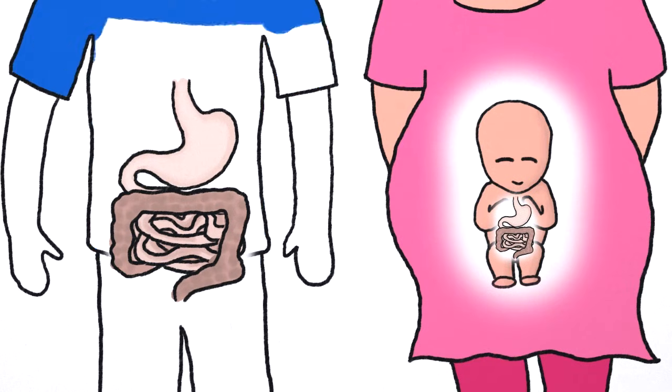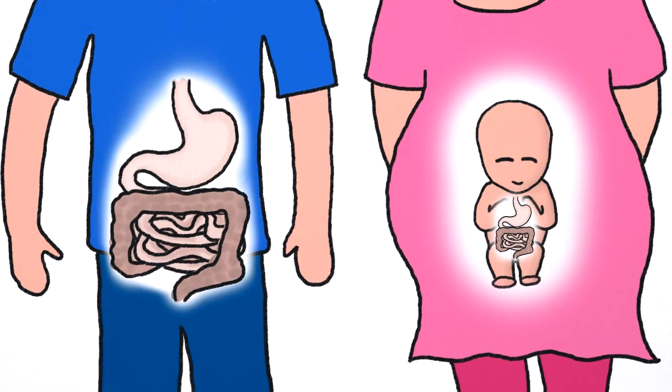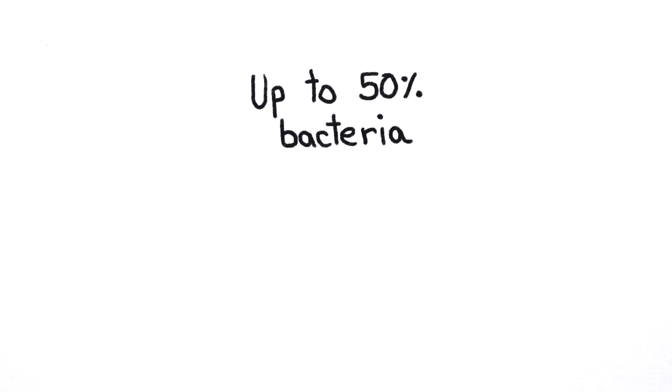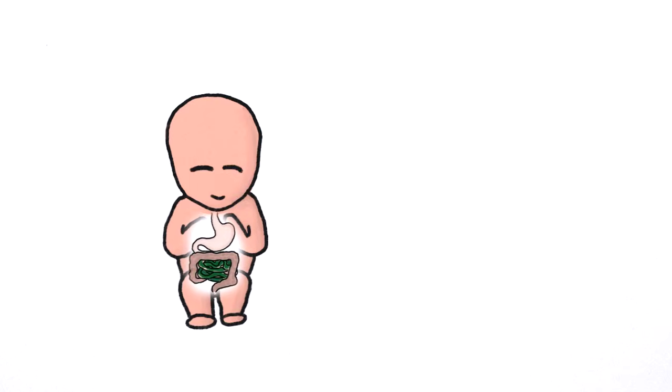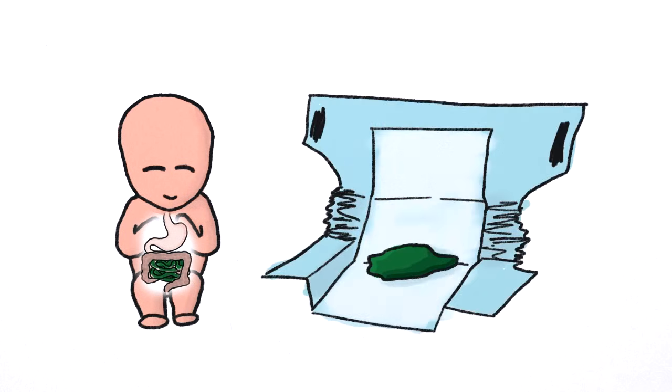But unlike the large intestine of everyone outside a womb, a fetus's large intestine is mostly sterile and devoid of the billions of bacteria that break down our waste and make up as much as 50% of the brown pulp known as feces. So the green, sticky mass that forms in a fetus's small intestines eventually becomes a green, sticky, and mostly bacteria-free mass inside the baby's first diaper.